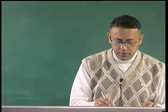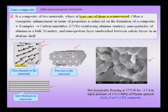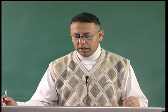In the case of nano composites, suppose the reinforcement phase is in the nano scale. The matrix could be a bulk phase while the reinforcement is in the nano scale. An example is a hot isostatically pressed sample where you have a carbon nanotube reinforcement — a ceramic alumina reinforced with carbon nanotubes. Ceramics are brittle with low fracture toughness, and when reinforced with carbon nanotubes the toughness of the material increases.